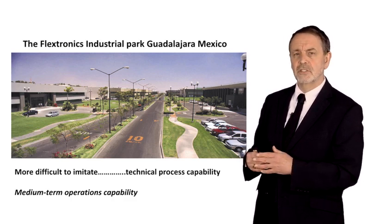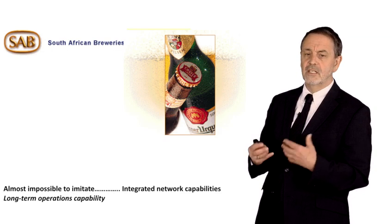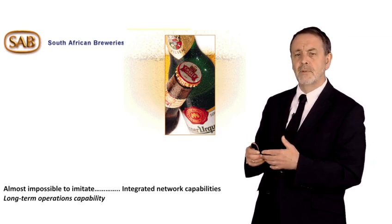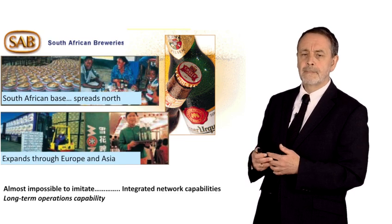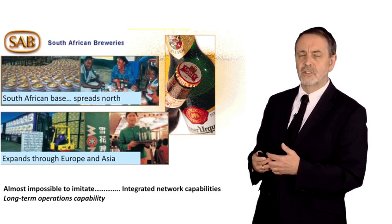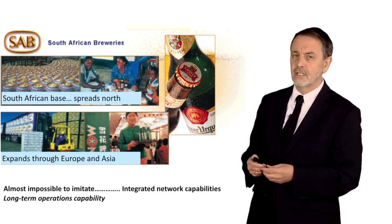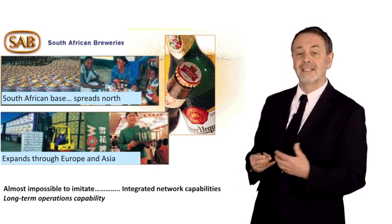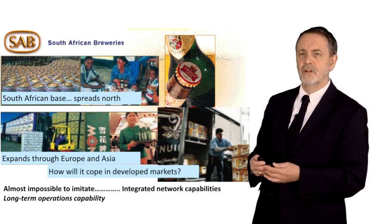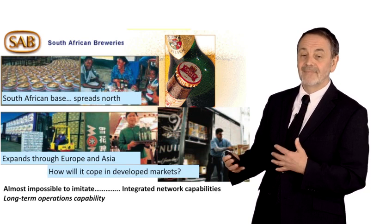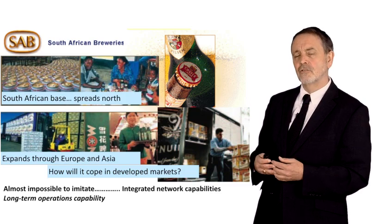Take South African Breweries, one of the two biggest breweries in the world. They started off with a South African base, spread that capability north, then moved into Europe and Asia through acquisition as well as organic expansion. It's almost impossible to imitate what South African Breweries have done because of their complex, integrated global network. But that doesn't mean all things are rosy — think about what they're going to do in developed markets competing against local breweries, craft breweries, and established players. That's where their acquisition strategy came in. A very long-term operations strategy — easily 20 years to see the growth of South African Breweries.